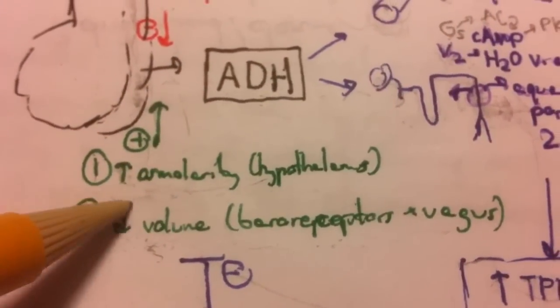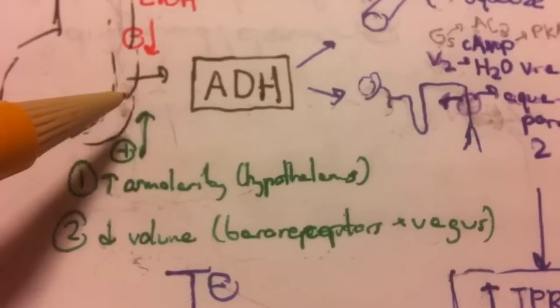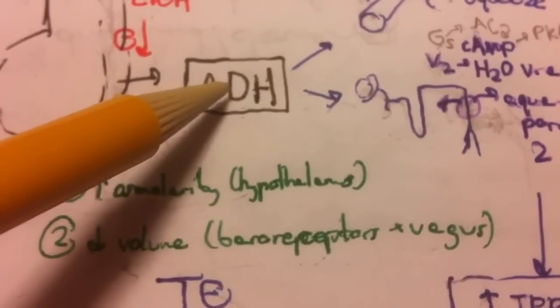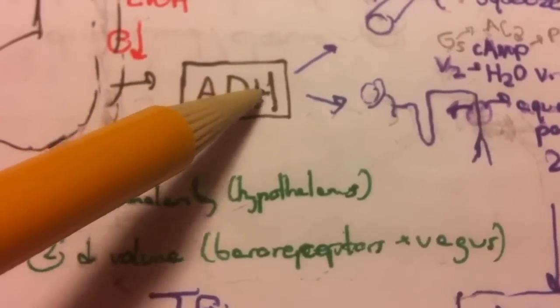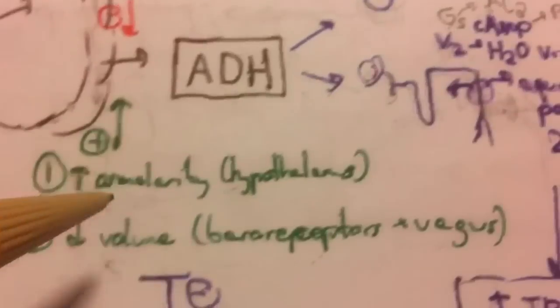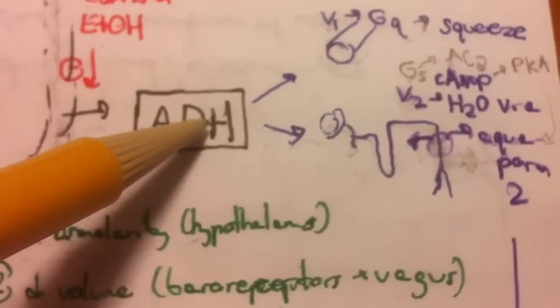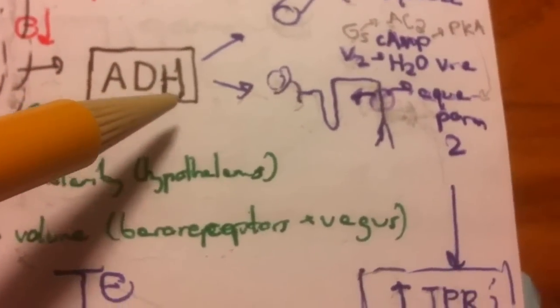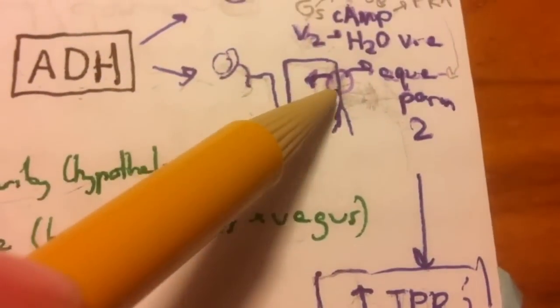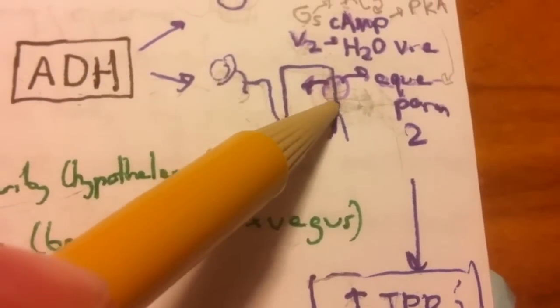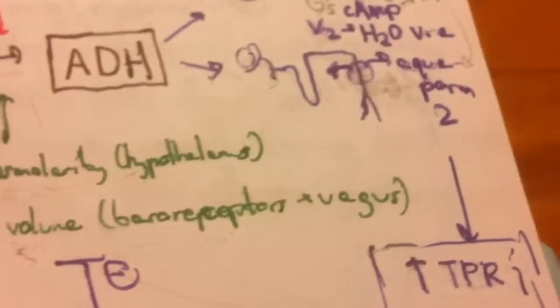So volume being down causes production of antidiuretic hormone despite the low osmolality, and antidiuretic hormone causes us to reabsorb more free water in the distal tubule.